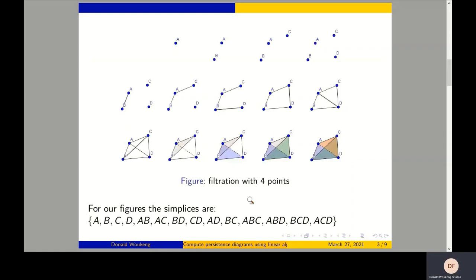Let's start with a filtration. In this filtration I'm just adding simplices. I start with nothing — this nothing represents a minus one dimensional simplex. After that I add a vertex, which is a zero dimensional simplex, and I add another vertex and so on. After the vertices I add edges. I continue building my filtration till I have added all the edges, and then I add the triangles, getting the final simplicial complex.